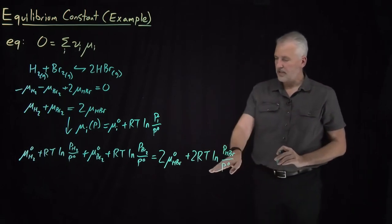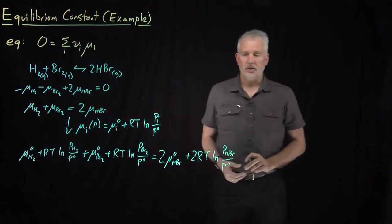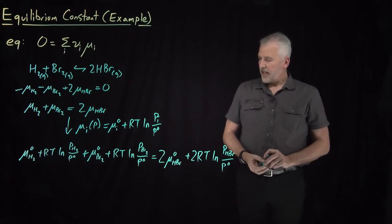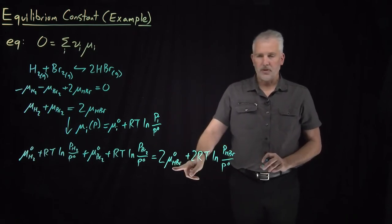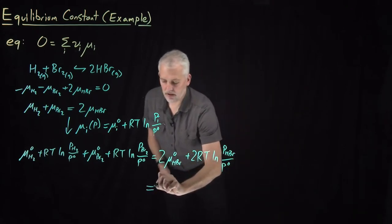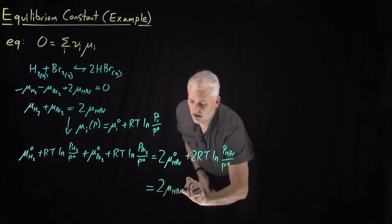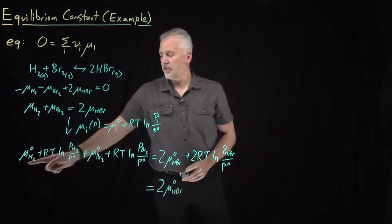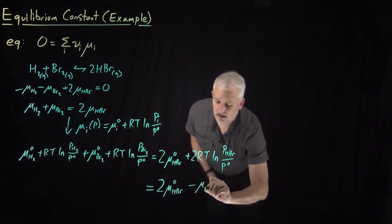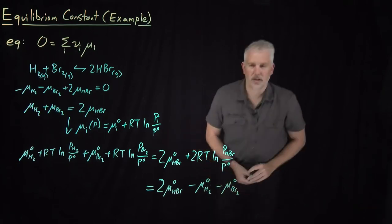That's a long expression telling us what the chemical equilibrium condition looks like for this HBr reaction. We can clean it up by collecting all of the standard chemical potential terms on the right-hand side: twice μ°(HBr), minus μ°(H₂), minus μ°(Br₂). On the left side, we keep all the RT·ln pressure terms.